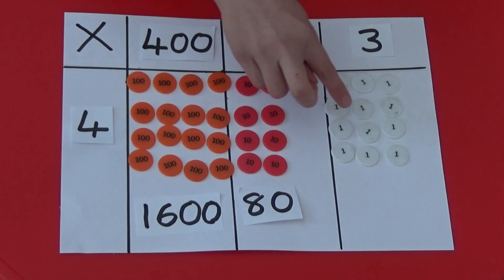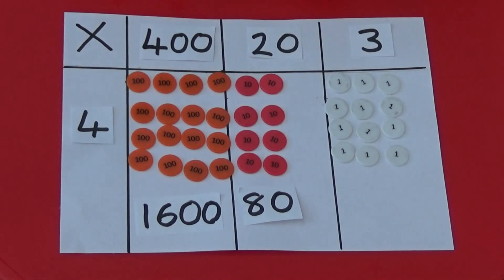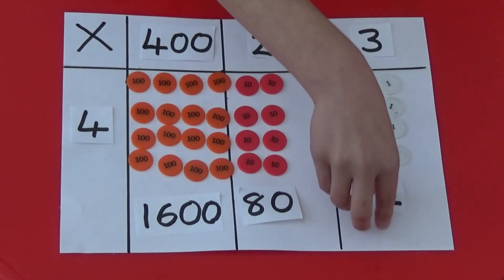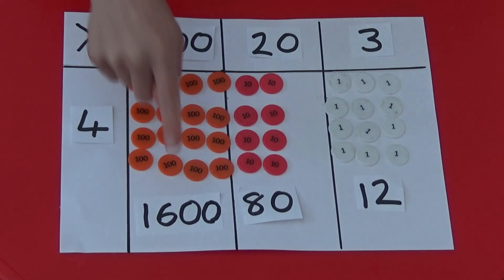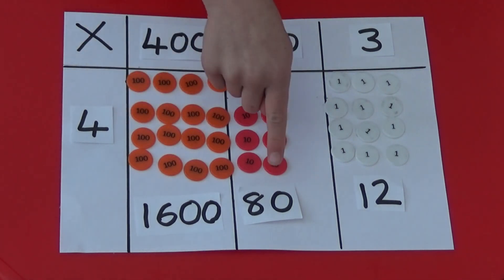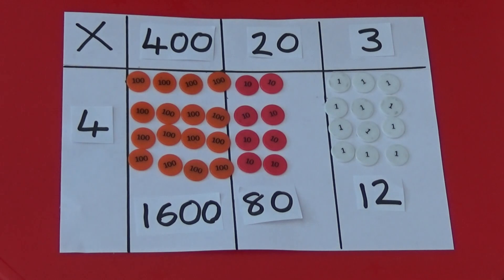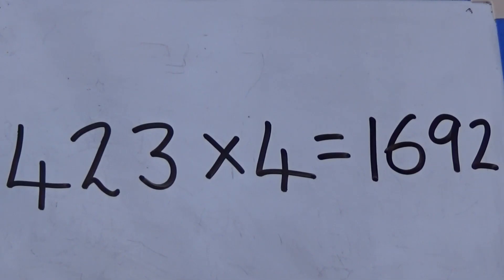And we have 3, 6, 9, 12 ones, which makes 12. If we add together the 1,600, the 80, and the 12, we get 1,692. So 423 multiplied by 4 equals 1,692.